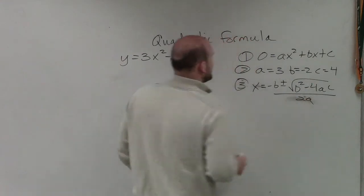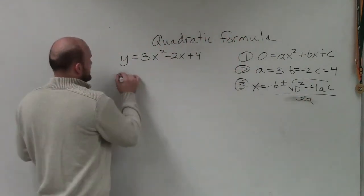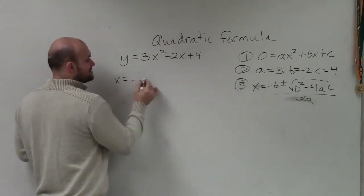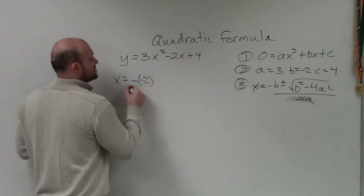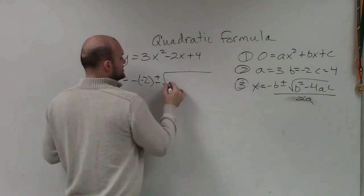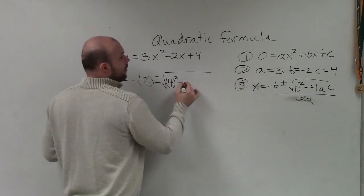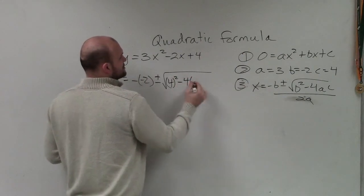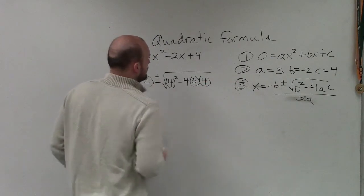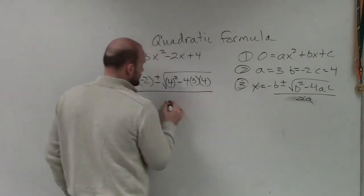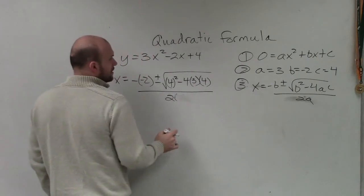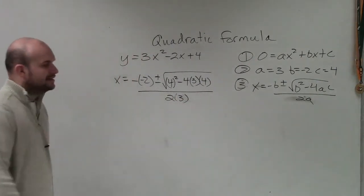We're going to take our a, b, and c and plug them into the equation. So x equals the opposite of b — b is negative 2, so that becomes positive — plus or minus the square root of b squared minus 4 times a, which is 3, times c, which is 4, all divided by 2 times a, which is 3.